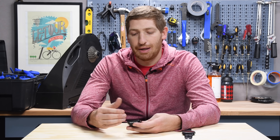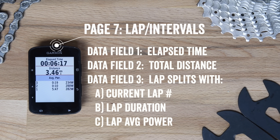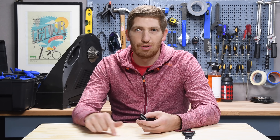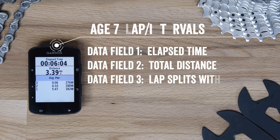Finally, I have the lap page, which shows my lap splits. At the top it shows the total ride time, then my total distance, and below that the lap number, time on that lap, and the average power for that lap. If I'm using this screen, I'm usually doing interval laps in a loop scenario — like a 1K or 2K loop at a park — hitting the lap button each time around to track trends.